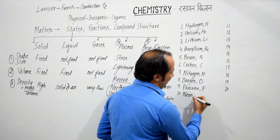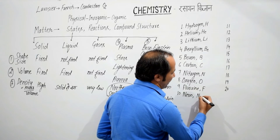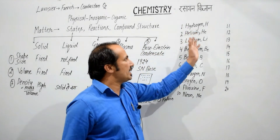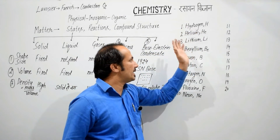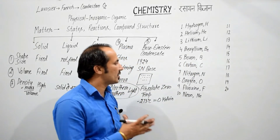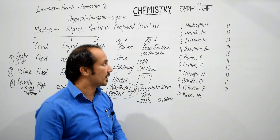And tenth number — neon, symbol capital N, E. So: hydrogen, helium, lithium, beryllium, boron, carbon, nitrogen, oxygen, fluorine, और neon — तो यह important है, दस तक याद करने.